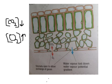Plants don't want to lose excessive amounts of water, so they have several adaptations. First, stomata close at night, preventing water loss when photosynthesis isn't occurring. Second, the waxy cuticle on the upper epidermis prevents water from evaporating through the upper surface, since oils and waxes don't mix with water.